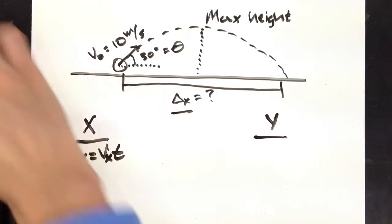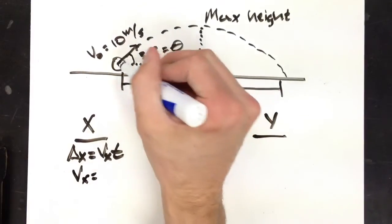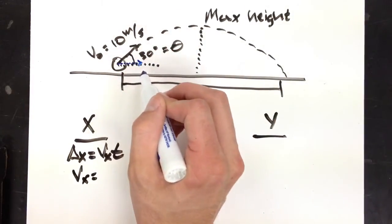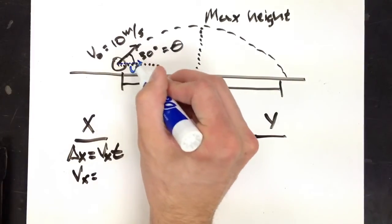Vx is, again, right here. It's how far over I go in the x direction. So to get vx, it's going to be v0 cosine of theta.